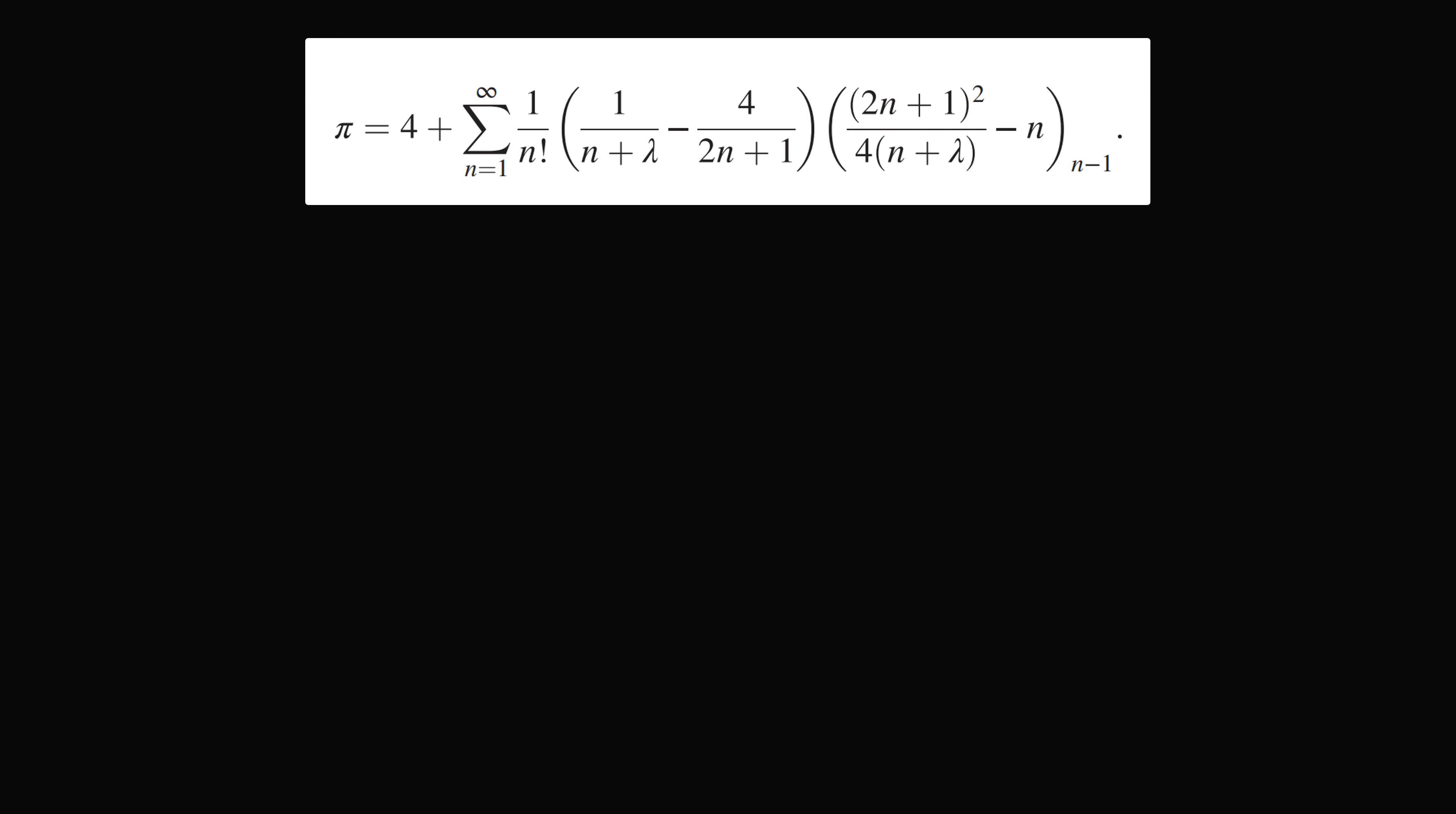So we can take a value for lambda. So let's say lambda is equal to 10. Now we have an infinite series here. So in the original Madhava formula you would need a billion terms just to get a few accurate digits of pi. So instead of summing up an infinite number of terms,